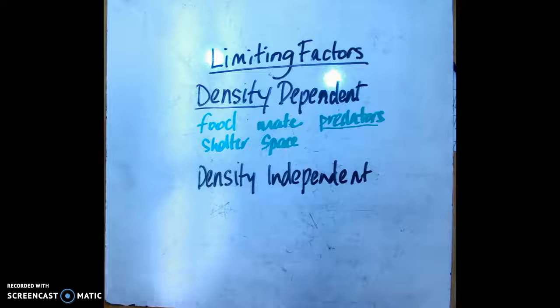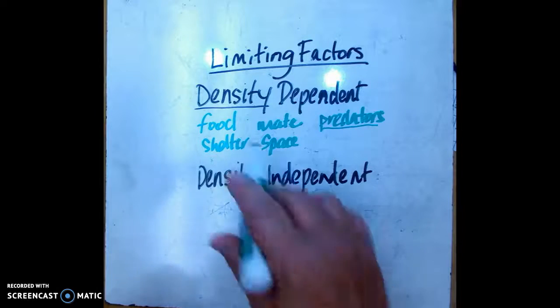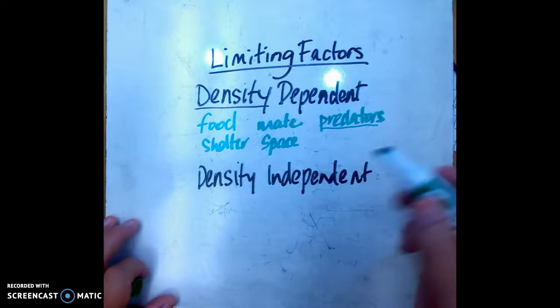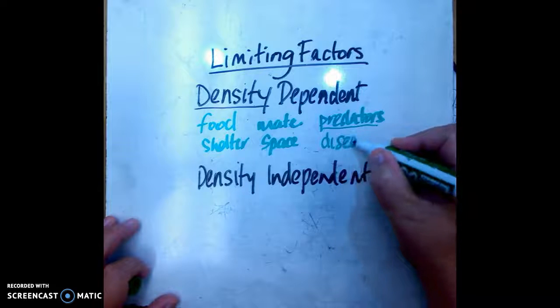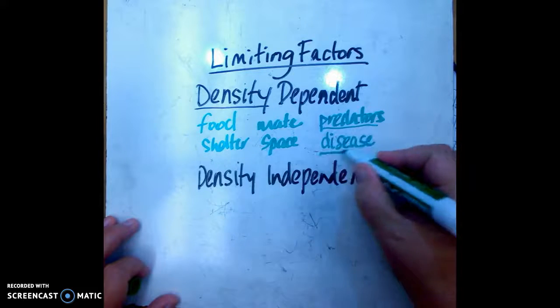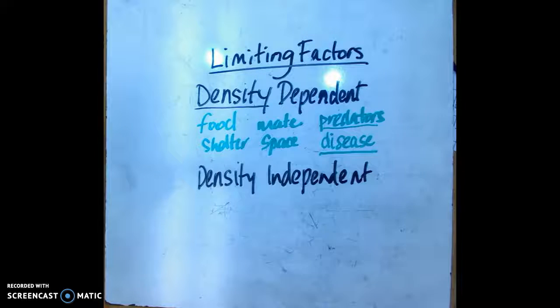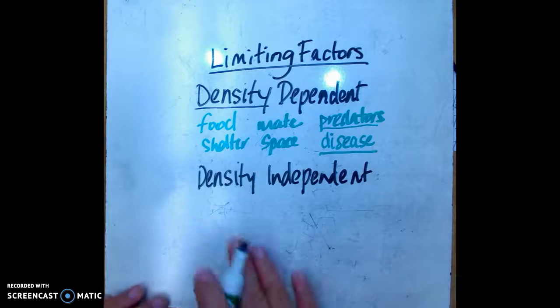So the more individuals there are, the higher the density of the population, the more predators will be there. And the next one is disease - disease will spread much more quickly in a very dense population. So those are the things that are density dependent limiting factors.